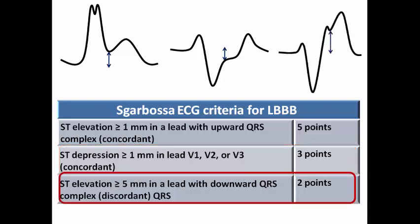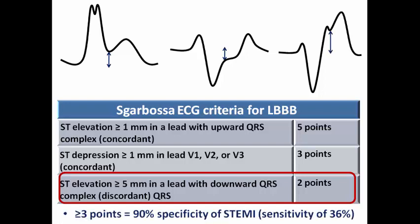The third Sgarbossa criterion was originally defined as ST-elevation of more than or equal to five millimeters in a lead with a downward QRS complex — discordant ST-elevation. In the right precordial leads the QRS is predominantly negative, so ST-elevation there is discordant with the complex. If it exceeds five millimeters in these leads, it scores two points. It is accepted to see ST-elevation up to five millimeters in right precordial leads in LBBB; only exceeding five millimeters is considered significant. A total score of three or more points gives 90% specificity for STEMI, and I would arrange for primary PCI to exclude culprit artery occlusion.